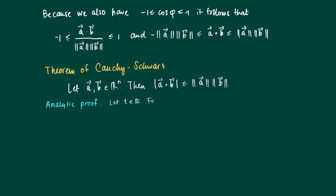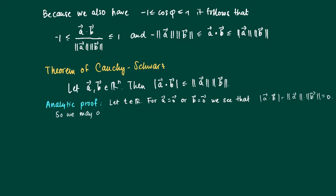Suppose we have a number t in R. First of all, if a or b is zero, then the Cauchy-Schwarz theorem holds trivially — we obtain 0 less than or equal to 0. So without loss of generality, we may assume that a and b are both non-zero, since we only truly need to prove something when they are both non-zero.